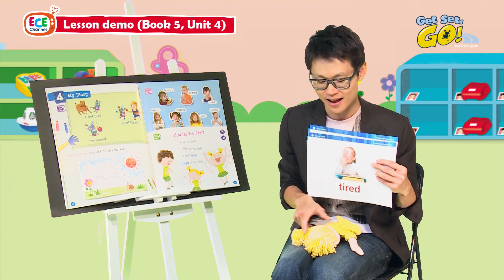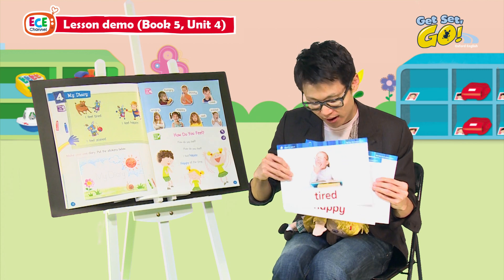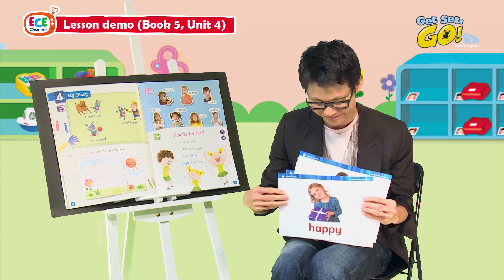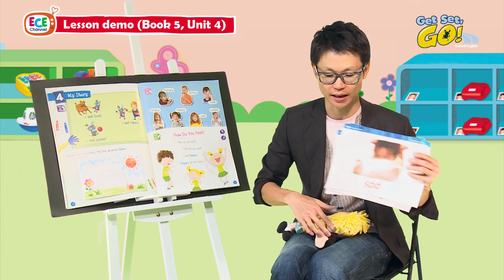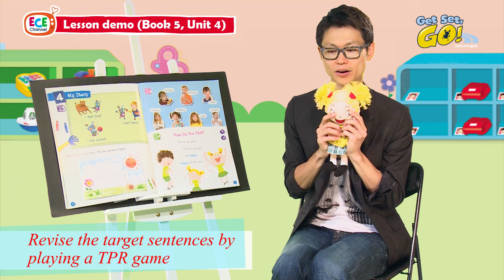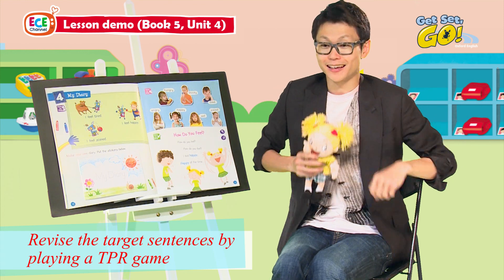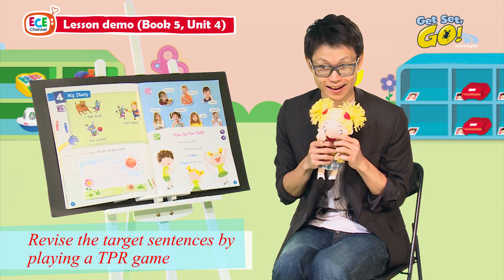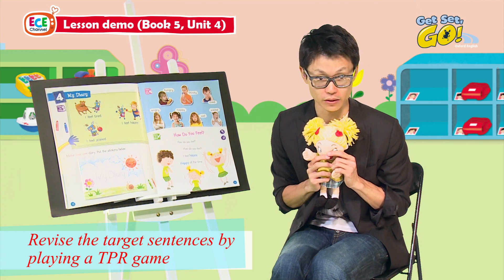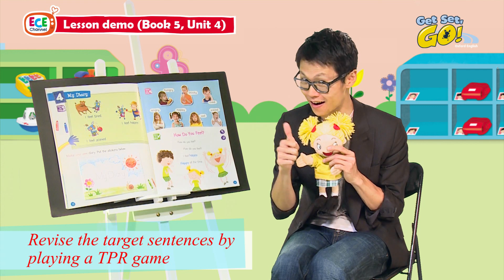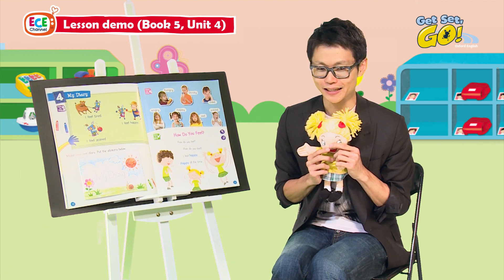Now we're going to play a game involving Molly. Molly will say one of these words: tired, happy, angry, sad. Whenever you hear 'Molly feels angry,' you need to make an angry face and say 'Molly feels angry.' But if you hear 'actually feels sad,' you don't need to do anything. Let's start — Molly feels sad!